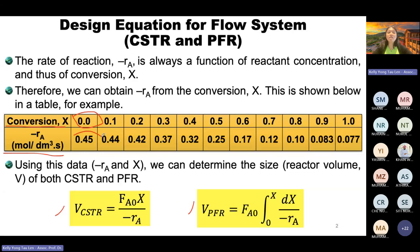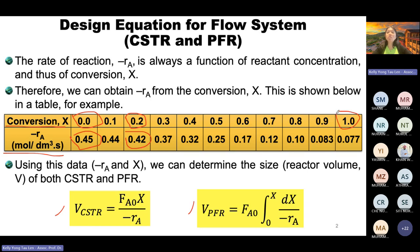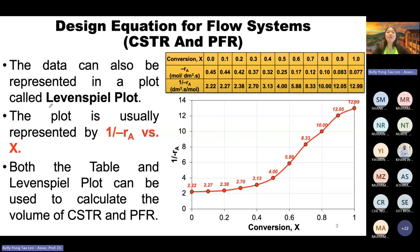From a table of conversion versus −rA, we can determine the volume of a CSTR or PFR. For example, at X = 0, −rA = 0.45; at X = 0.2, −rA = 0.42, and so on. Conversion can be expressed as a percentage but must be converted to a fraction for calculation. We use X to represent conversion.